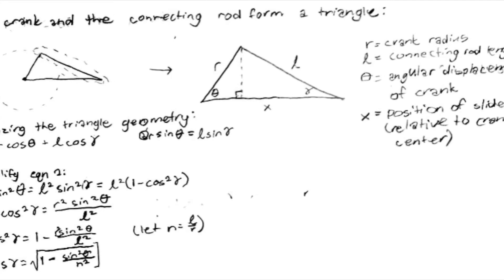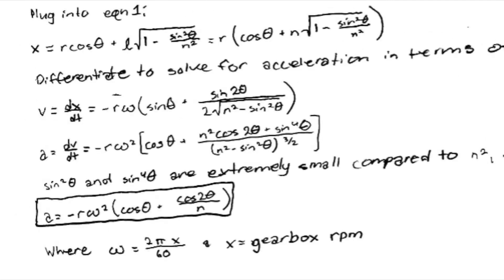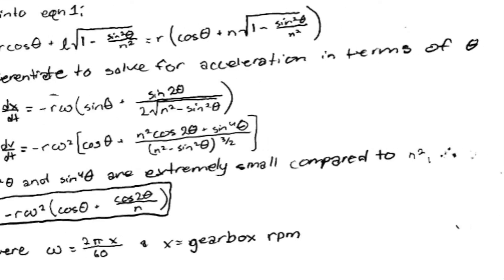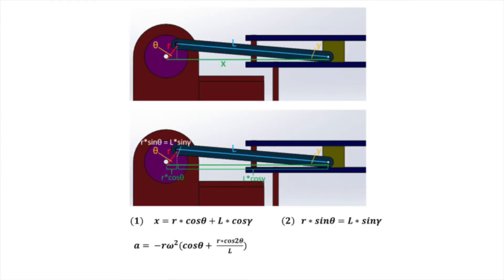We won't include the entire derivation in this video for the sake of time, but using the trigonometric relationships between these components, we can solve for the position in terms of the angle between the crank and the horizontal, and integrating this position equation twice gives us an equation for acceleration.